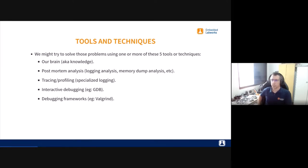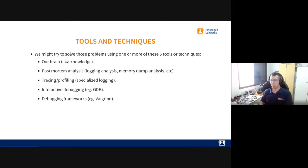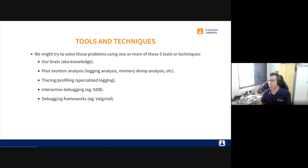Another technique is interactive debugging with GDB — you can run your application step by step, interact with it, and inspect memory. The last category is debugging frameworks: tools that were made to debug a specific kind of problem. The kernel has a few debugging frameworks. A very well-known one is Valgrind — a framework for memory-related tools used to find memory leaks and other memory-related problems in applications.